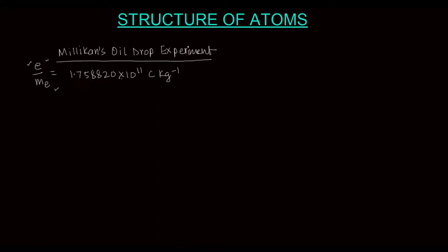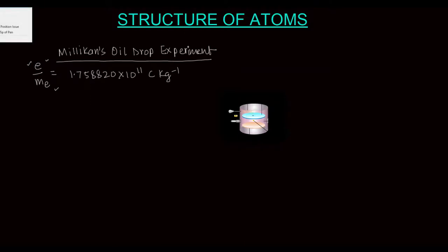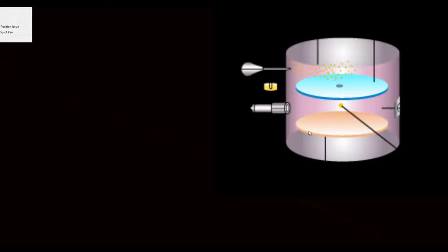Millikan did an ingenious thing while designing his experiment. The apparatus he used had an atomizer - he took some oil here, and when he pressed this rubber thing, the oil got atomized into very small droplets.